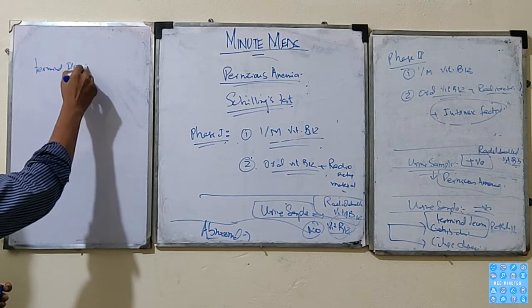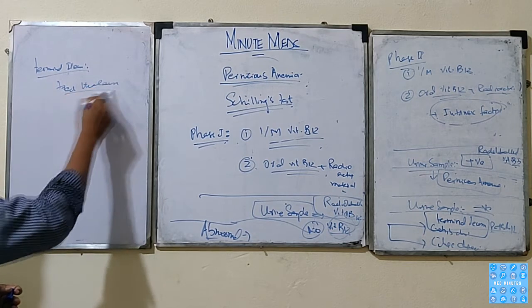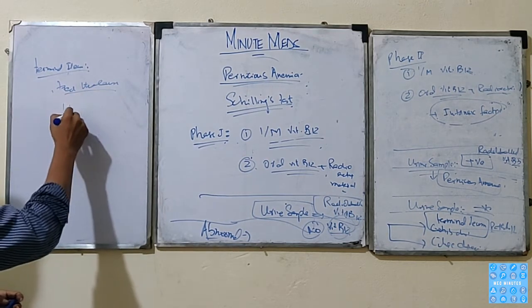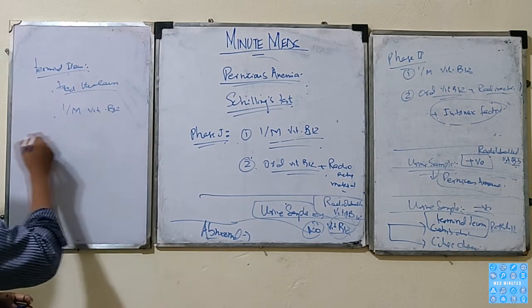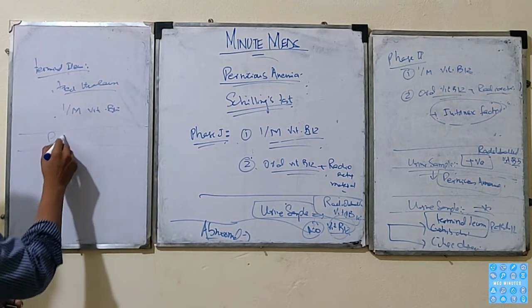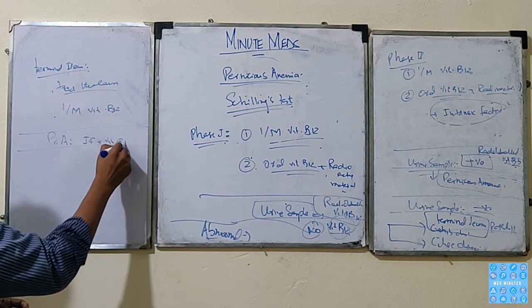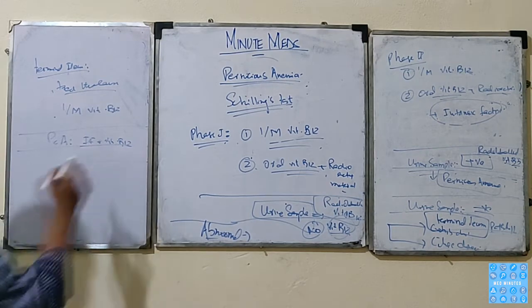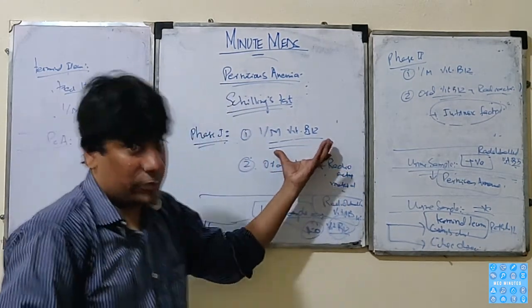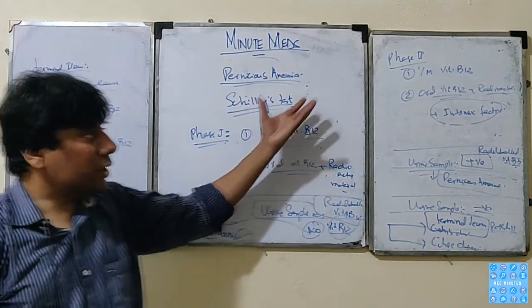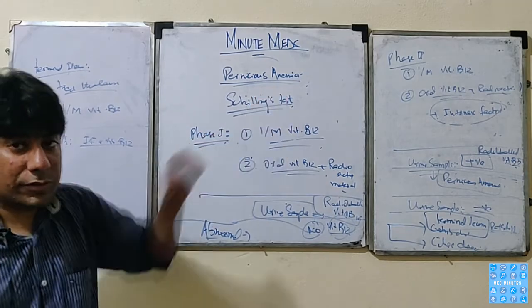We treat the cause and give parenteral vitamin B12. In cases of pernicious anemia, we give intrinsic factor along with vitamin B12. So that's all about how we approach a patient with megaloblastic anemia and what are the different causes of vitamin B12 deficiency.